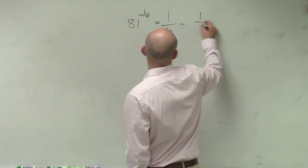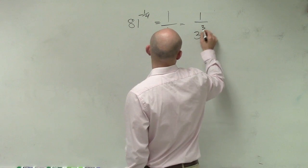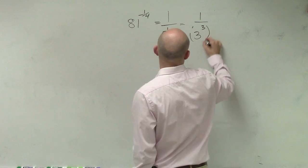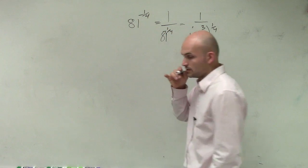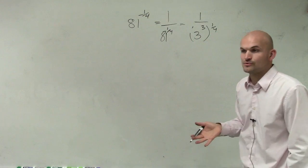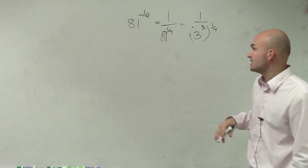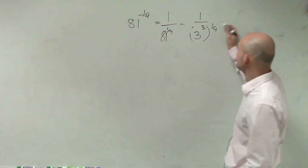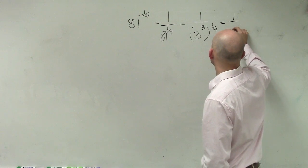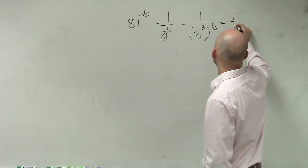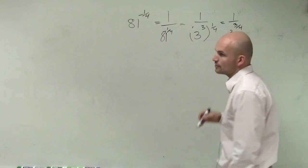So let's rewrite this as 1 over 3 to the fourth. There's nothing wrong with your answer of 9 squared, but I'll show you why we could change that. Can I simplify this further? Yes.